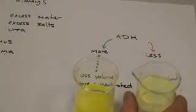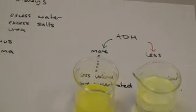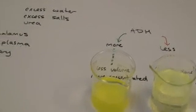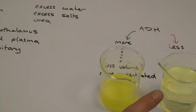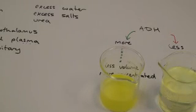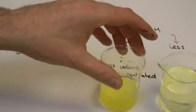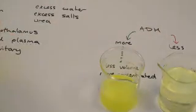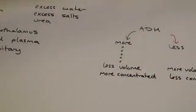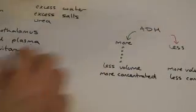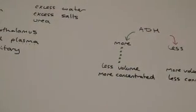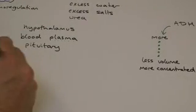Less ADH gives more urine that is less concentrated, or more dilute. That would be the urine if we produced lots of ADH — it's concentrated, it's a darker colour and there's not as much of it. When we're producing less ADH, we make more urine and it's dilute — a paler colour — meaning there's more water in it.